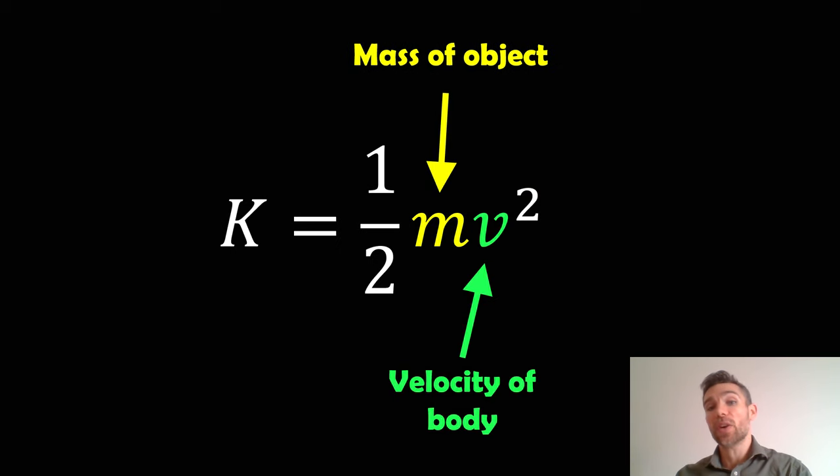We can then define the kinetic energy of that object, that projectile, as a half mv squared, where m would be the mass of the actual object and v would be the velocity of that object as well, or that body.